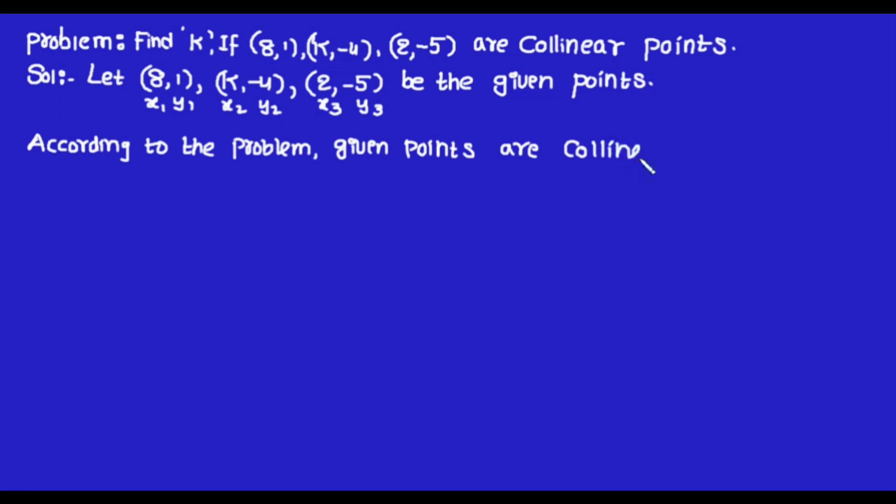We know that collinear points cannot form a triangle. That means the area of triangle ABC is equal to 0.